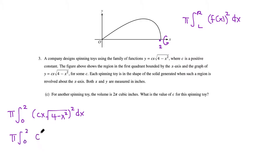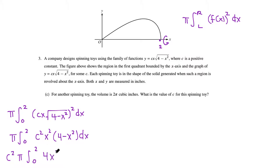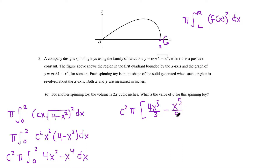Squaring the function inside the integral: (cx√(4 − x²))² = c²x²(4 − x²), since the square root cancels. Pulling c² out as a constant and distributing x² gives 4x² minus x⁴. Integrating yields c²π times [4x³/3 minus x⁵/5], evaluated from 0 to 2. Since the lower bound is 0, all x terms vanish, and we just plug in x = 2: 4(8)/3 minus 32/5 = 32/3 minus 32/5.